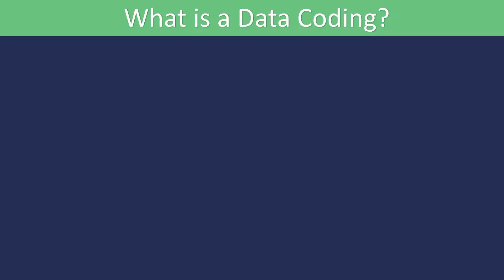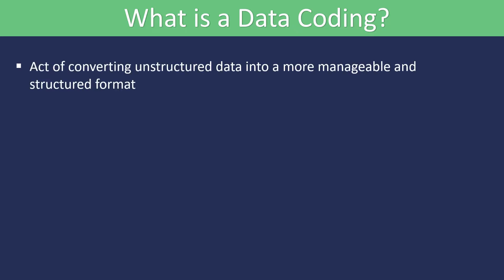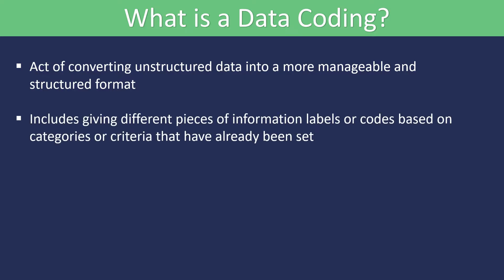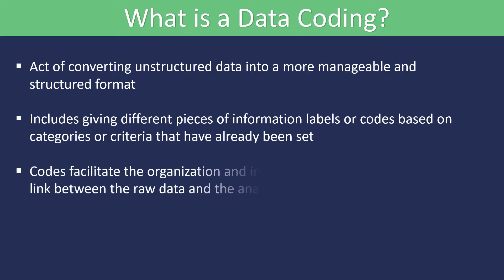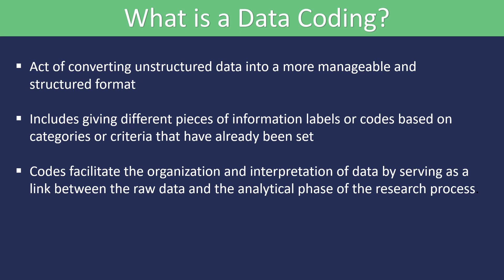What is data coding? Data coding is the act of converting unstructured data into a more manageable and structured format so that researchers may find themes, patterns and relationships in their data. It includes giving different pieces of information labels or codes based on categories or criteria that have already been set. These codes facilitate the organization and interpretation of data by serving as a link between the raw data and the analytical phase of the research process.